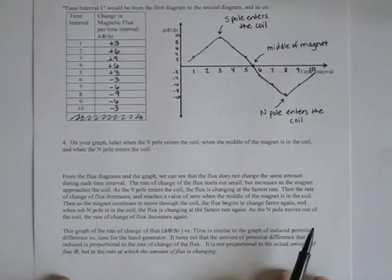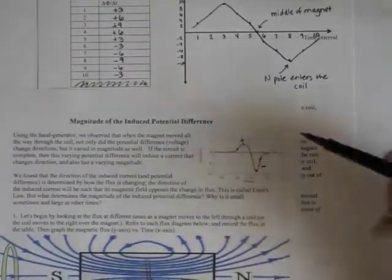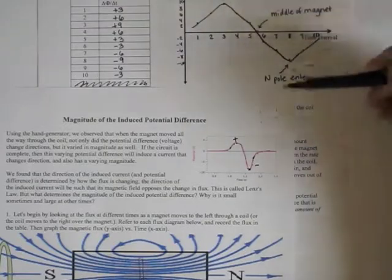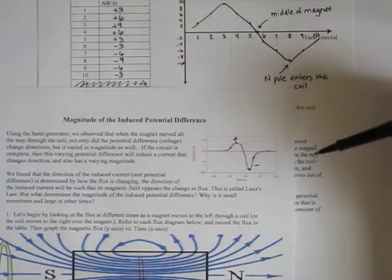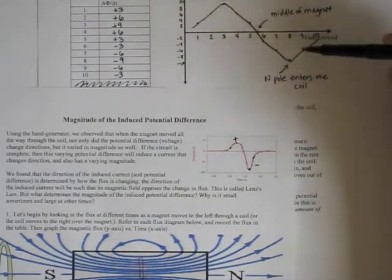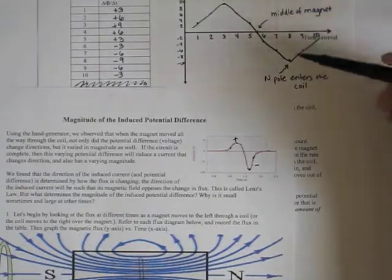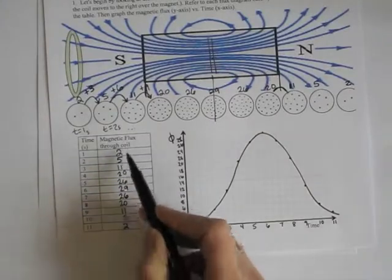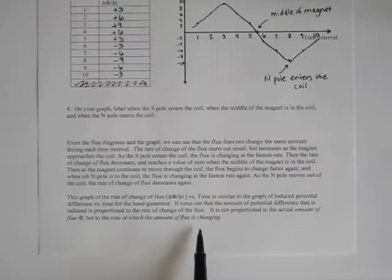This graph of the rate of change of flux — delta phi over delta t — versus time is similar to the graph of induced potential difference versus time for the hand generator. We can compare and see the similarity: an up peak and a down peak for each. The reason the shapes aren't more exact is because this data is manufactured rather than real flux data. It turns out that the induced potential difference is proportional to the rate of change of the flux — not to the actual amount of flux itself.